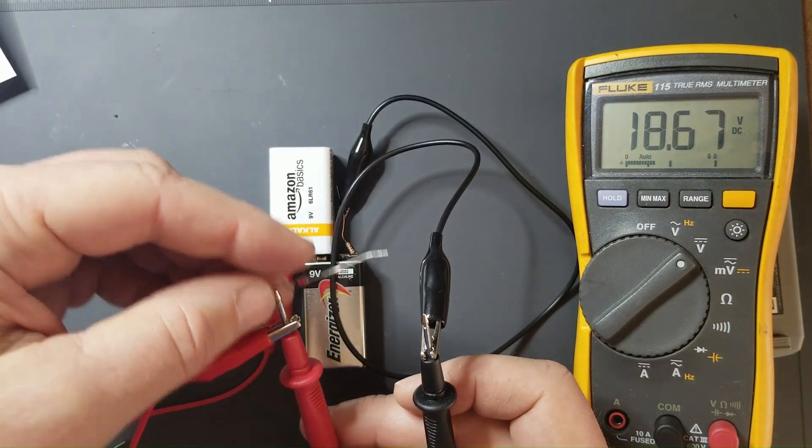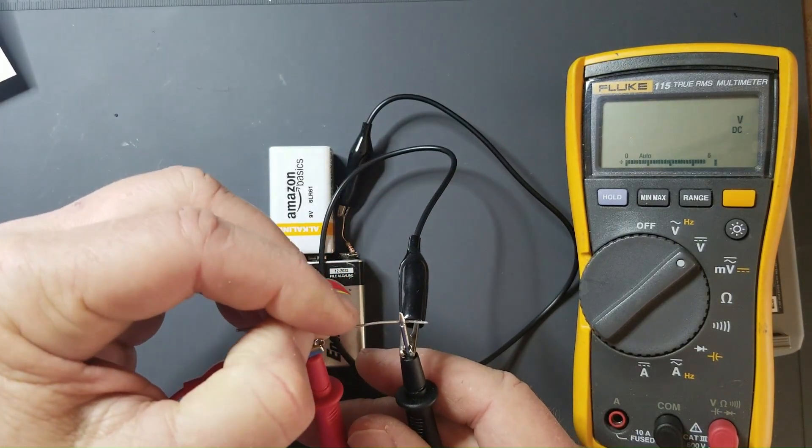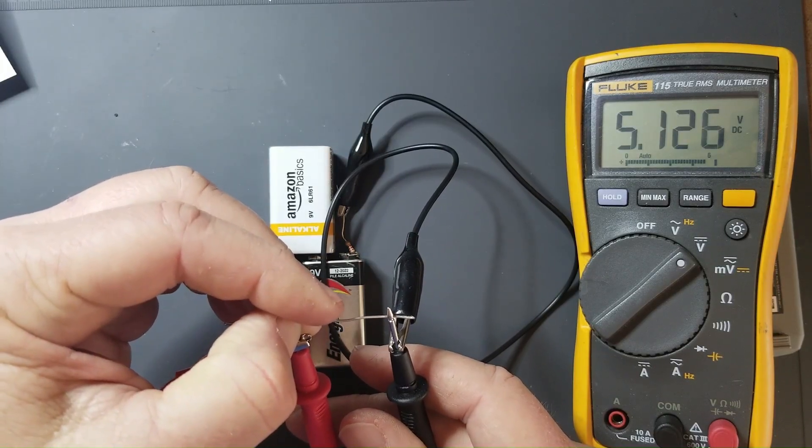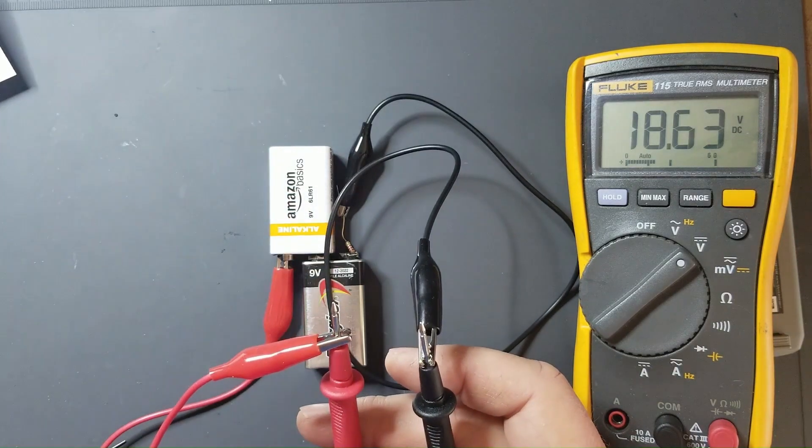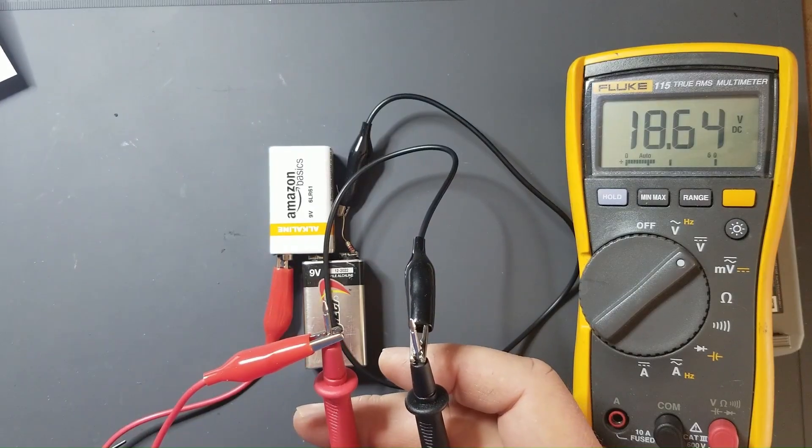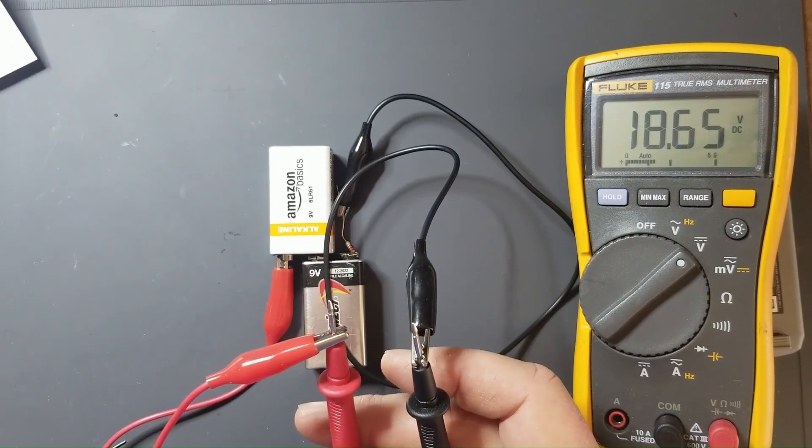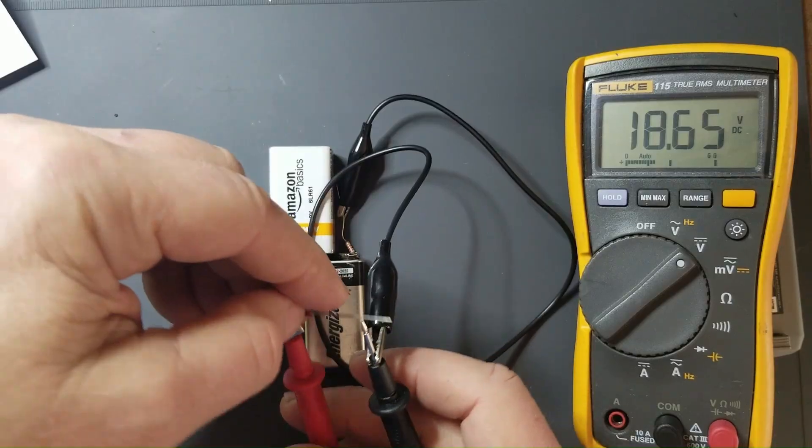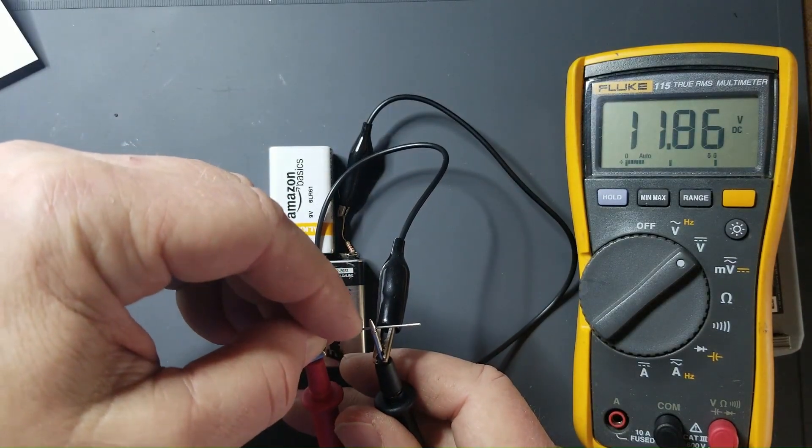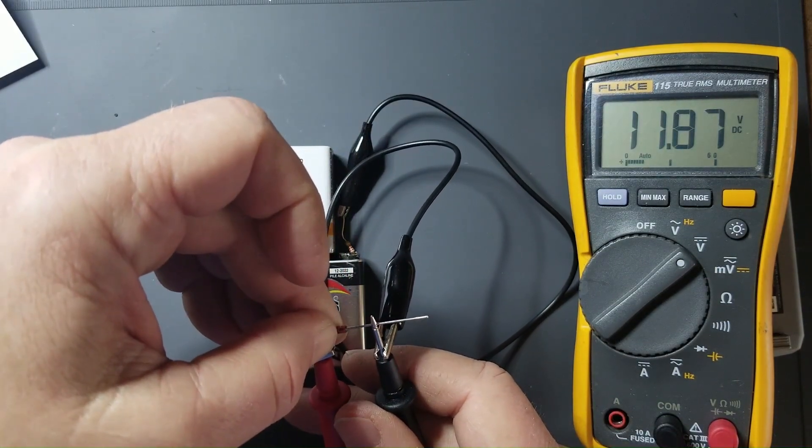But you can also test Zener diodes. So this is a 5.1 volt Zener diode here. Let's test another one. This is a 12 volt Zener diode. This is reading 11.86 volts.